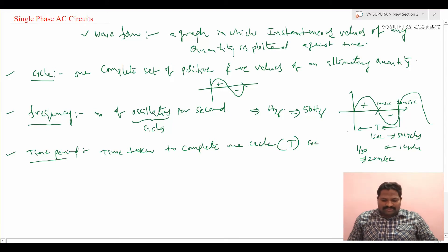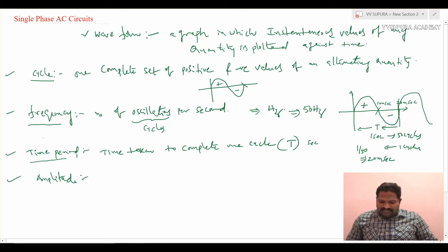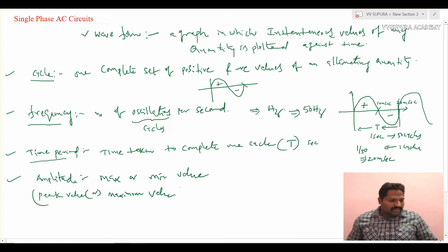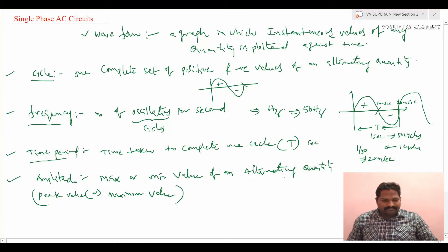The next term is amplitude. Amplitude is defined as the maximum positive or negative value of an alternating quantity in a waveform. It is also known as the peak value or maximum value.